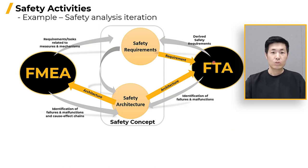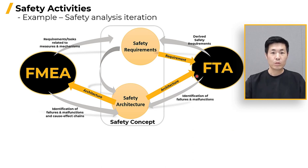These two methods complement each other. For instance, once we have an architecture consisting of subcomponents, we can conduct an FMEA analysis on it. Similarly, FTA can be performed, leading to the derivation of new safety requirements and subsequent modifications to the architecture. FTA, FMEA, and safety design can be constructed complementarily.